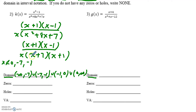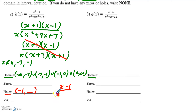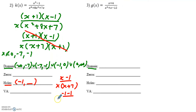Now that I've found the domain, I'm going to cross out the x plus ones. Whenever I cross out a factor, that leads to a hole. So the x value of my hole would be at x equals negative one. To find the y value, I plug negative one into the reduced version of my function: x minus one over x times x plus seven. That gives negative two over negative one times six, which equals positive one third. So my hole is at negative one comma one third.